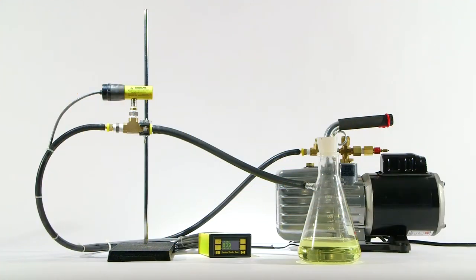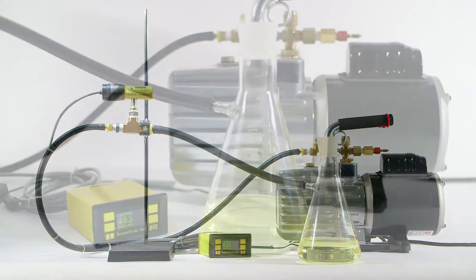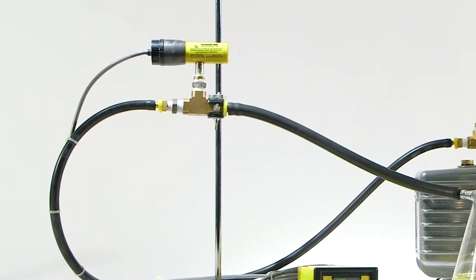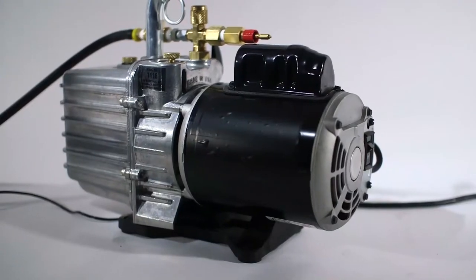A good way to explain the principle underlying vacuum dehydration method is with a demonstration. For this demonstration, we'll use a vacuum flask that contains some insulating oil, a vacuum gauge, and a vacuum pump.